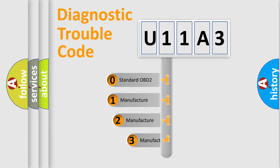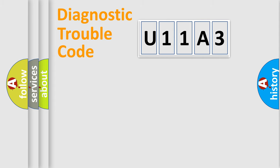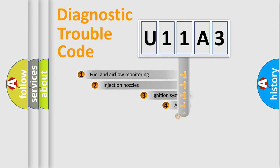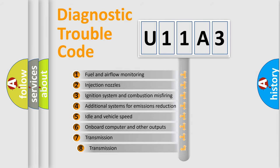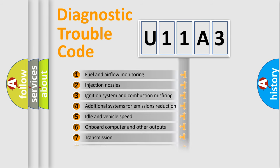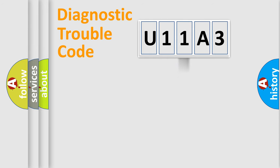If the second character is expressed as zero, it is a standardized error. In the case of numbers 1, 2, or 3, it is a manufacturer-specific expression of the car error. The third character specifies a subset of errors. The distribution shown is valid only for the standardized DTC code.